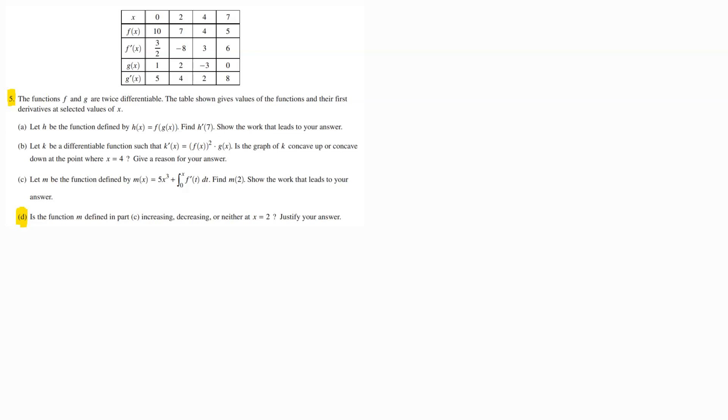Okay, so diving into this problem, we've got a big table of values up at the top here that we'll have to work from. Let's see what D is specifically asking us. So D is saying, is the function M defined in Part C, so M of X equaling this equation up here, increasing or decreasing or neither at this specific value X equals 2.